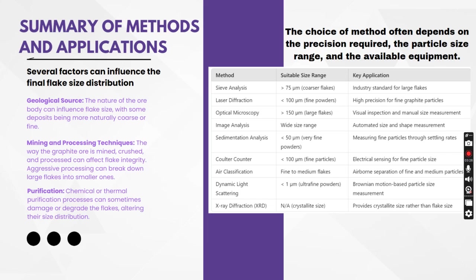We must first understand the several factors which can influence the final flake size distribution. From geological source, different types of deposits naturally show variation — some deposits are naturally small flake size graphite, while some are very good quality. For example, in Africa there is the Lindi Jumbo area where from the name itself you can understand that graphite flakes are very jumbo size. Other than geological source, mining and processing techniques can create problems — aggressive processing can break down large flakes into smaller ones, which can drastically deteriorate the value of that deposit.